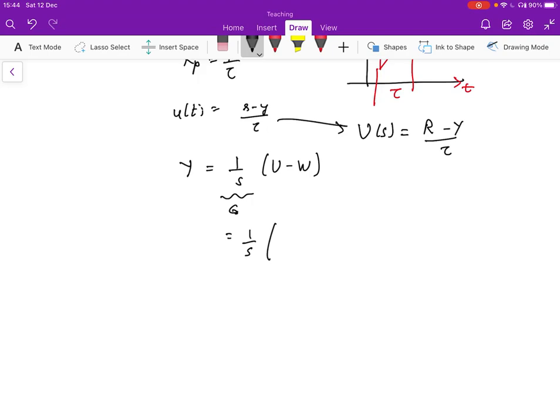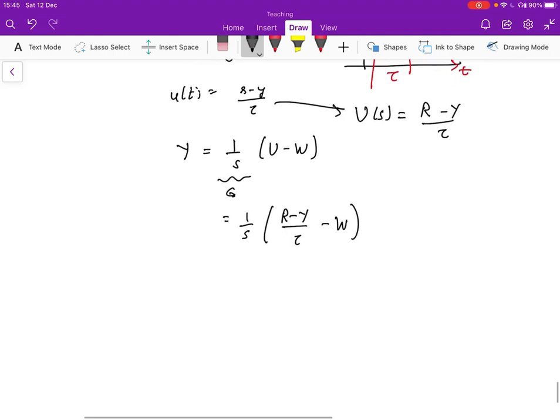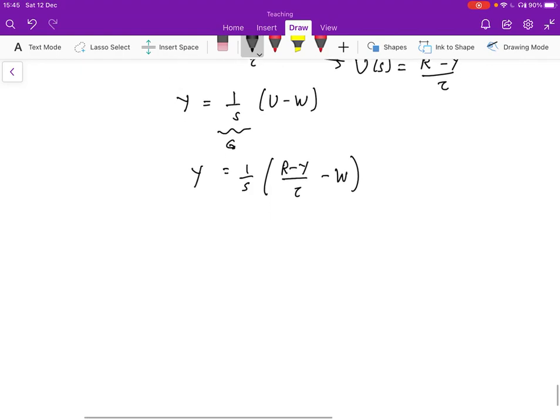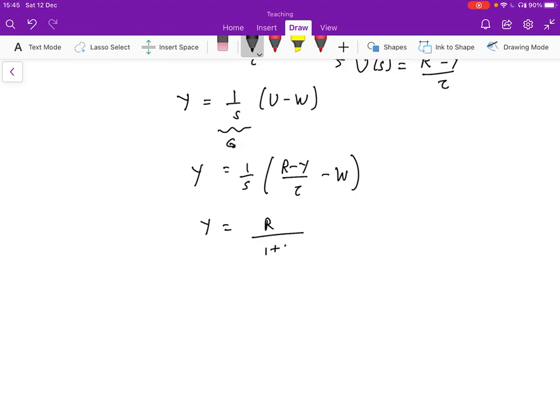So in that case, we're going to have U of S is given by R minus Y over tau, where R and Y are the Laplace transforms. And so Y is, this is going to be one over S, R minus Y over tau minus W, where W is the Laplace transform of the disturbance. So by rearranging the terms over here, we can find that Y is going to be given by R over one plus S tau minus W tau over S times one plus S tau.